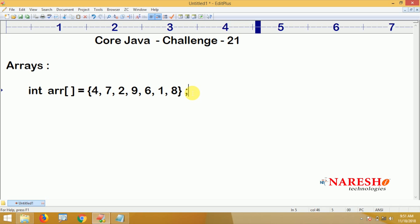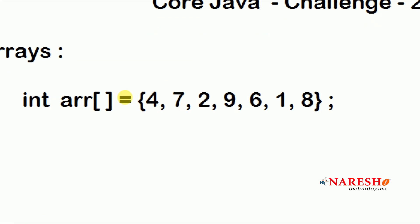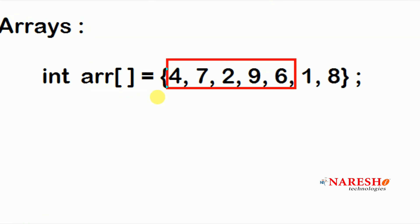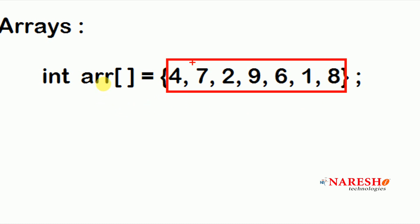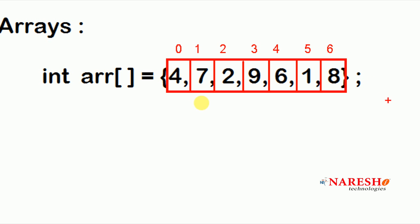I will explain the concept, and with your logical programming skills you have to write the code. Whenever an object is created for this array, all the elements get memory allocation. The array index starts with 0, so with 7 total elements the indices run from 0 to 6. Now we need to find out the largest element.